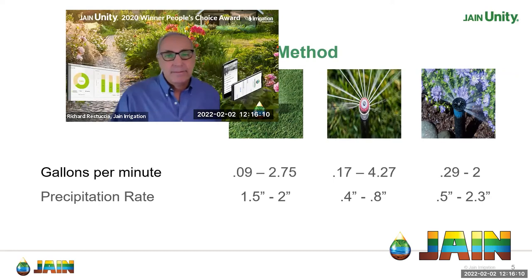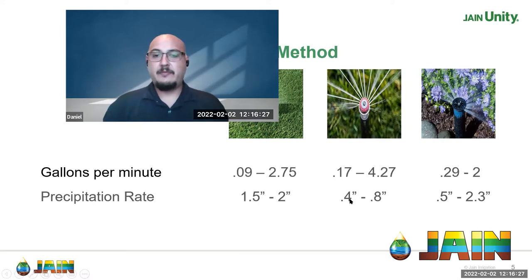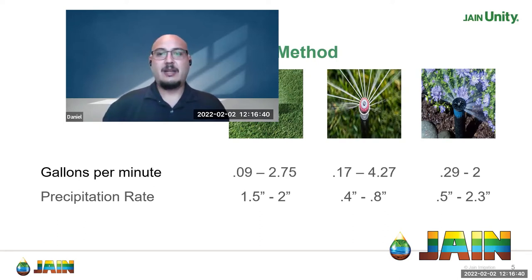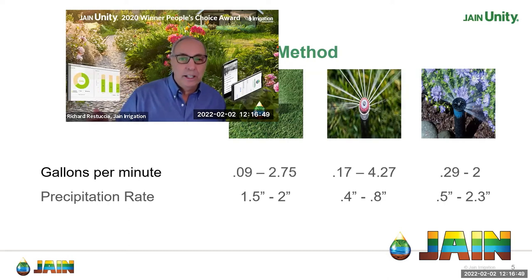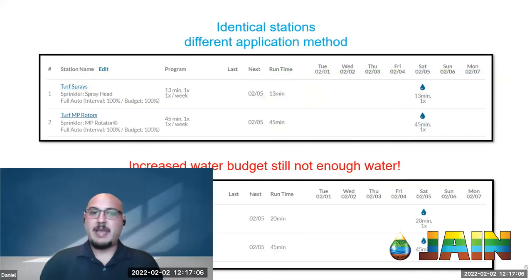The precipitation rate is important: a spray head usually puts out about 1.5 inches per hour. An MP rotator is usually about 0.4 to 0.8 inches per hour on a smaller model — about one-third the rate of a spray head. If you do the quick math, your MP rotator is going to need to water three times as long as the general rule. So if you were running a spray head for 20 minutes, you might be running an MP rotator closer to 60 minutes.